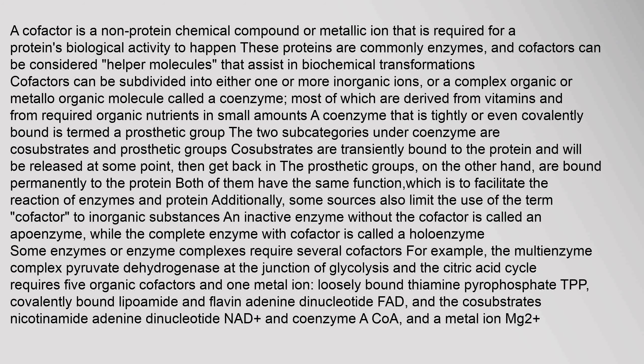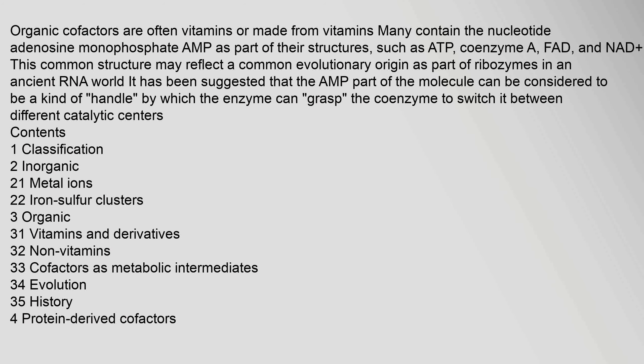An inactive enzyme without the cofactor is called an apoenzyme, while the complete enzyme with cofactor is called a holoenzyme. Some enzymes or enzyme complexes require several cofactors. For example, the multi-enzyme complex pyruvate dehydrogenase at the junction of glycolysis and the citric acid cycle requires five organic cofactors and one metal ion: loosely bound thiamine pyrophosphate (TPP), covalently bound lipoamide and flavin adenine dinucleotide (FAD), and the co-substrates nicotinamide adenine dinucleotide (NAD) and coenzyme A (CoA), and a metal ion Mg2+.